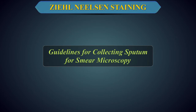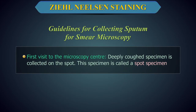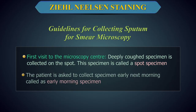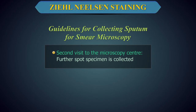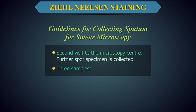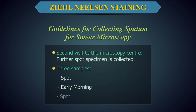Guidelines for collecting sputum for smear microscopy. First visit to the Microscopy Centre: when a TB suspect reports to the laboratory, a deeply coughed specimen is collected on the spot — this is called a spot specimen. The patient is then given a similarly marked empty sputum container to collect a specimen early next morning and bring it to the laboratory — this is called an early morning specimen. Second visit to the Microscopy Centre: the early morning specimen brought by the patient is received and a further spot specimen is collected. Thus, there will be three samples: spot, early morning, and spot.